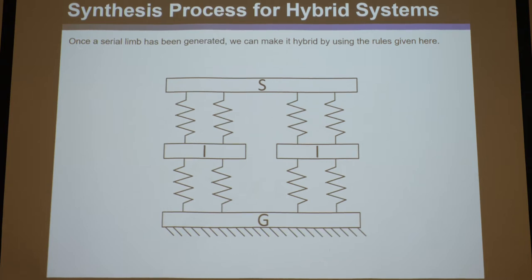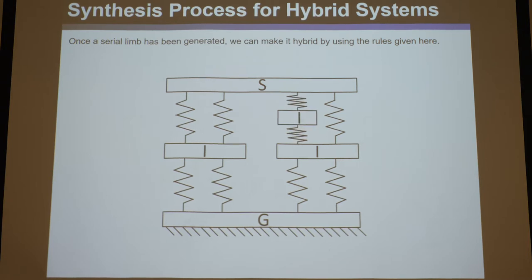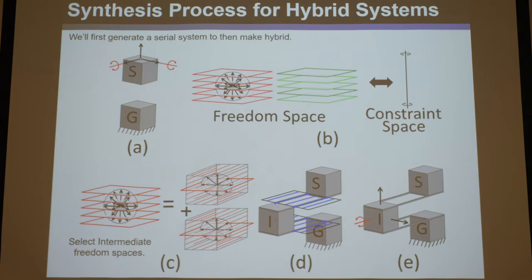What you do is you first synthesize either a parallel or a serial limb, and then you make one of the things in their serial — either an element or a system — to make the limb hybrid. I'll show you how to kind of do this. You already know how to do it, but I'm going to do an example because from here on out, there's really no new principles to teach.